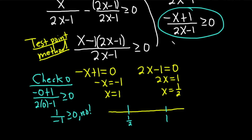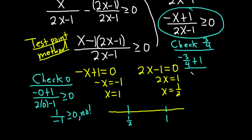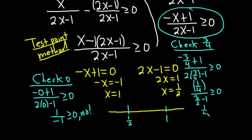Now let's check a number between 1 half and 1 — let's use 3 fourths. Plugging in: negative 3 fourths plus 1 over 2 times 3 fourths minus 1. The numerator is 1 fourth, and the denominator is 3 halves minus 1, which is 1 half. So we get 1 fourth over 1 half, which is positive and greater than or equal to zero. So we shade between 1 half and 1.